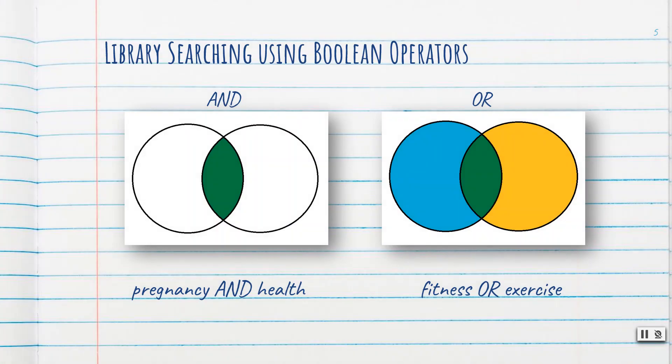We will connect these search terms using the Boolean operators AND and OR. When you use the Boolean operator AND, you'll get a much more focused set of results because your result list will contain both of these terms. For example: pregnancy AND health.